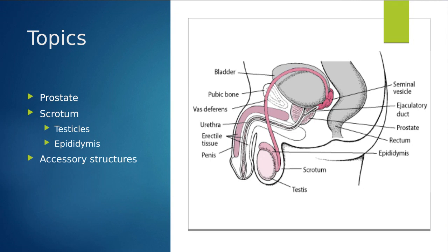Here we just have an overall diagram of some of the structures and organs we're going to be talking about. We're mainly going to be talking about the scrotum and its contents — the testicles and the epididymis — and all other components of those organs. We're also going to be talking about the prostate, the seminal vesicle, the ejaculatory duct, and a little bit of bladder location as well. This is a basic overview of what we're going to get into.